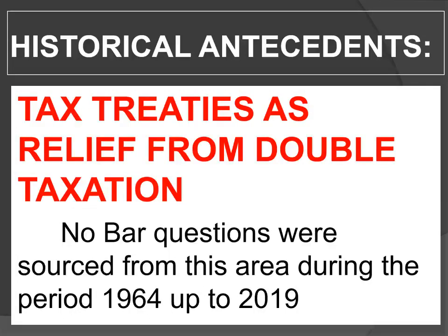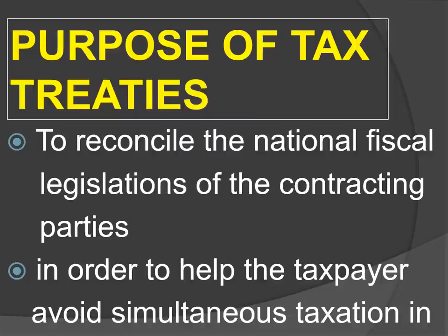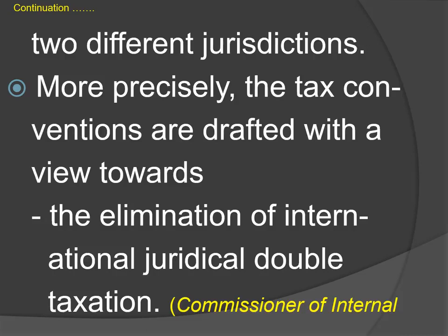What about tax treaties as a relief from double taxation? No questions were sourced from this area from 1961 to 2019. But this is part and parcel of the concept of double taxation, which is dangerous for the bar. What is the purpose of tax treaties? The purpose of tax treaties is to reconcile the national fiscal legislation of the contracting parties in order to help the taxpayer avoid simultaneous taxation in two different jurisdictions. More precisely, the tax conventions are drafted with a view towards the elimination of international juridical double taxation.